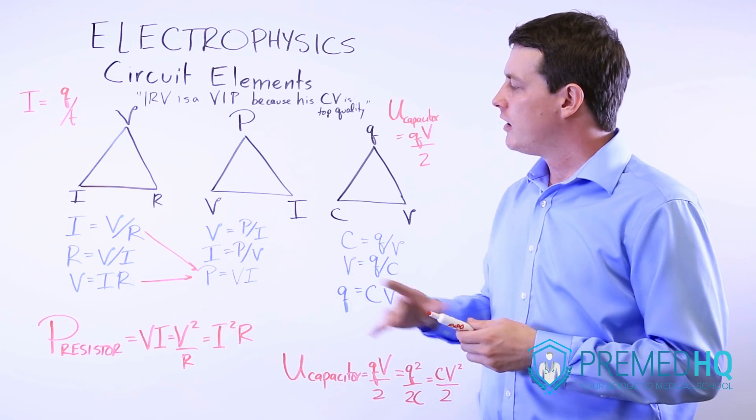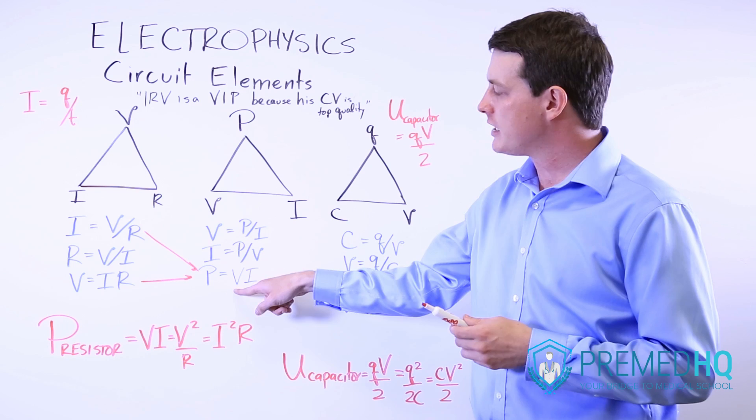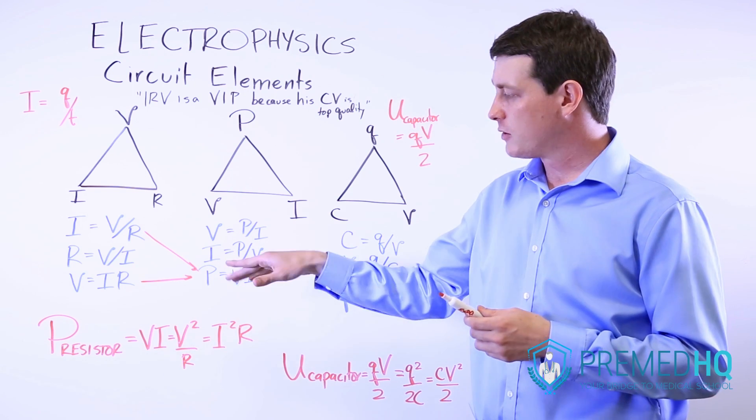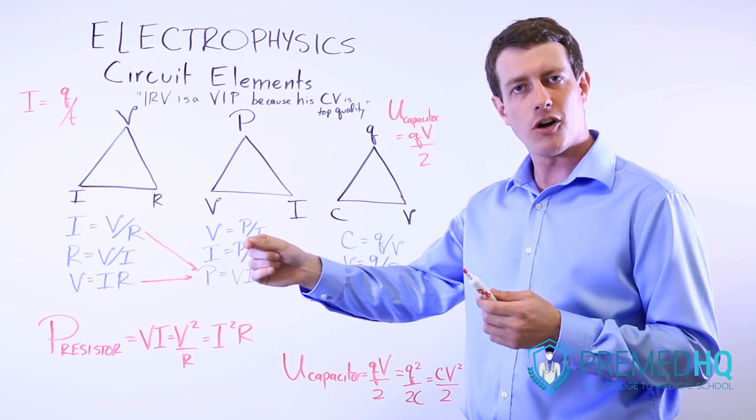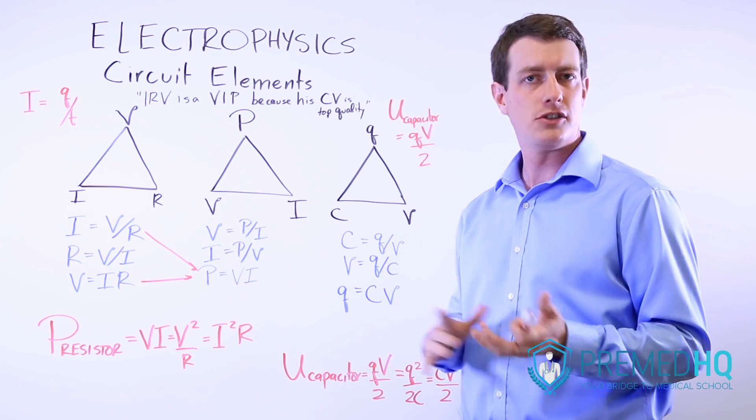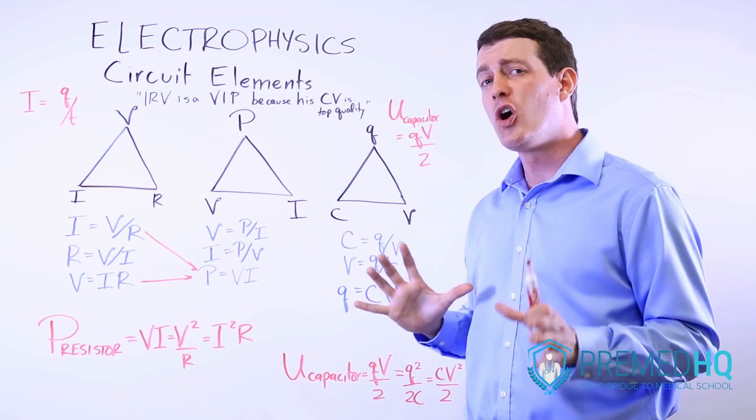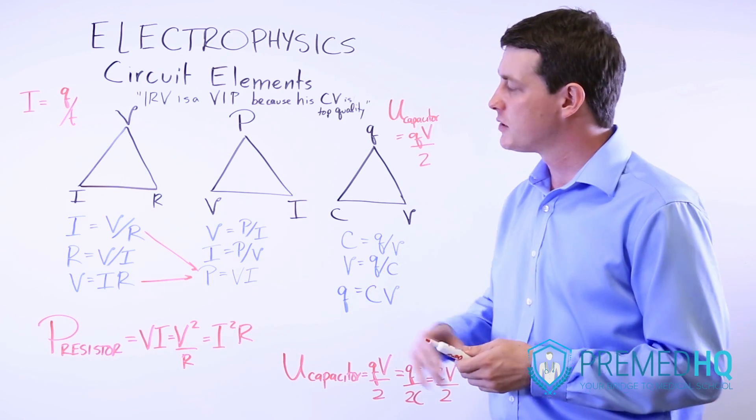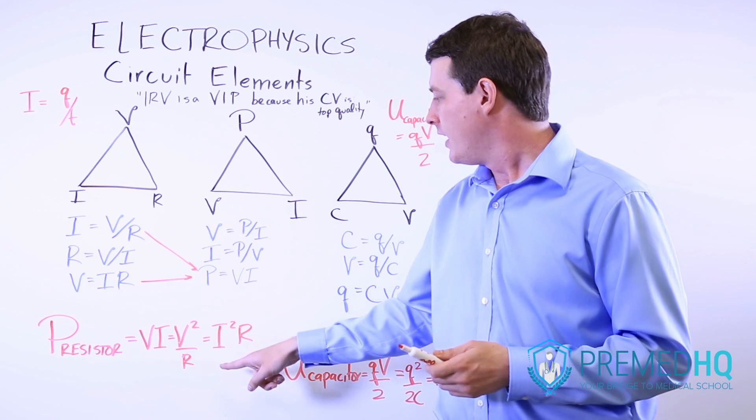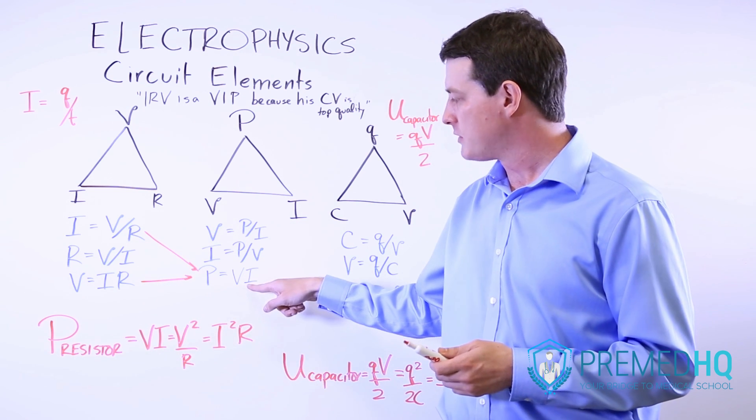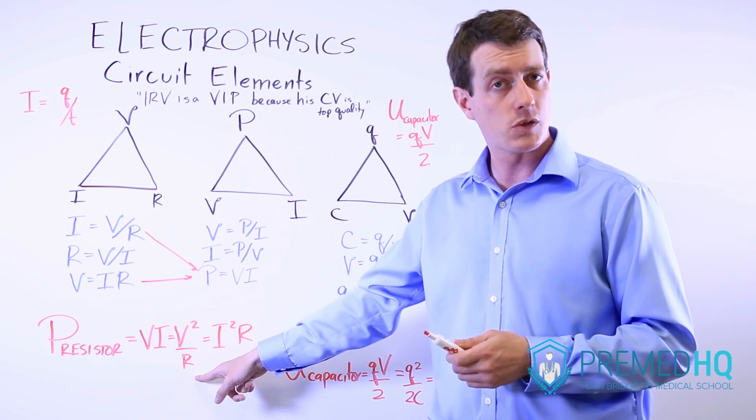And so we already know that power equals V times I. So the power of a resistor is going to be equal to the voltage gradient across it times the current traveling through it. Now we're not always given V and I. And so sometimes instead of I, we'll substitute V over R. And that will give us V times V over R, which equals V squared over R.